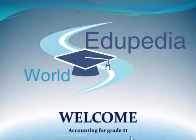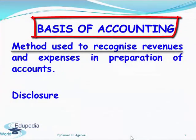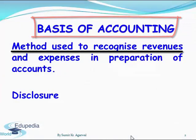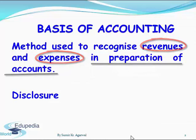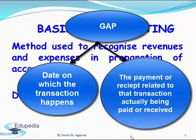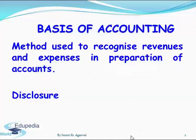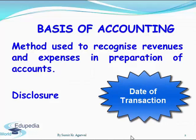Hi, welcome to Edupedia World. Today we will learn the basis of accounting. It is basically the method we use to determine when we should record or recognize our revenues and expenses while preparing our accounts. When we do any business, there is a gap between the date on which the transaction happens and the payment or receipt related to that transaction actually being paid or received. Because of this gap, we have to take a decision whether to recognize the transaction on the date of transaction or to record it on the date of payment or receipt.